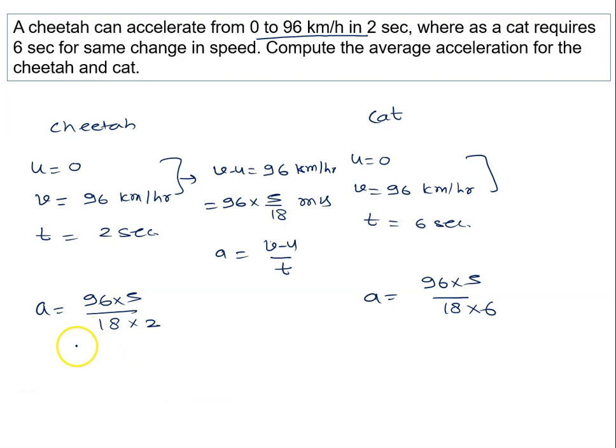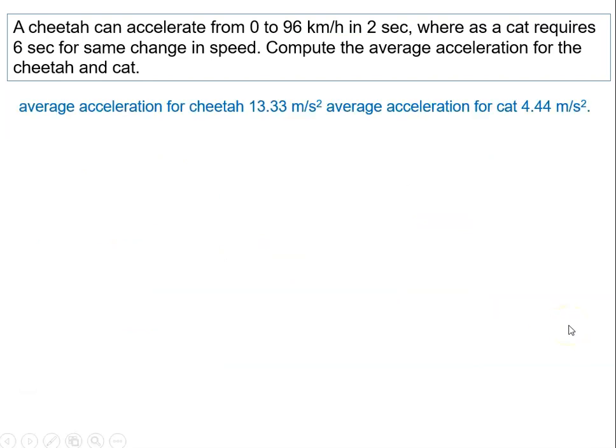So further we will solve with the calculator. We will get 13.33 meter per second square. And acceleration for the cat is 4.44 meter per second square. So the right answer to the problem is: average acceleration for the cheetah is 13.33 meter per second square, and average acceleration for the cat is 4.44 meter per second square.